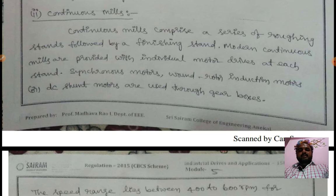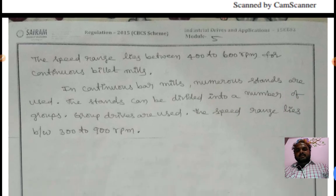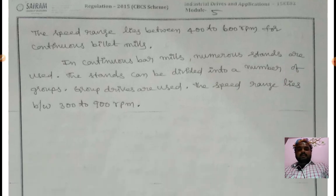Speed can be controlled by varying field excitation or resistance. The speed range lies between 400 to 600 RPM for continuous billet mills. In continuous bar mills, numerous stands are used that can be divided into groups. The speed range lies between 300 to 900 RPM.